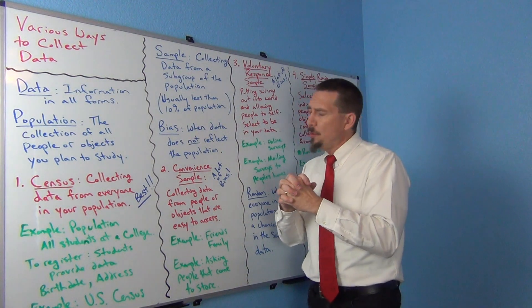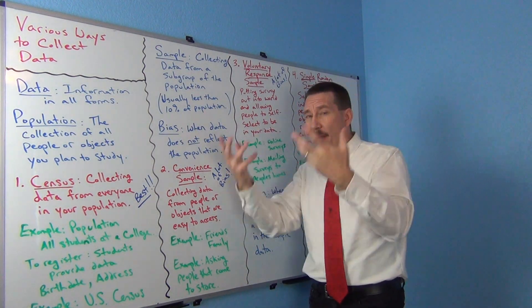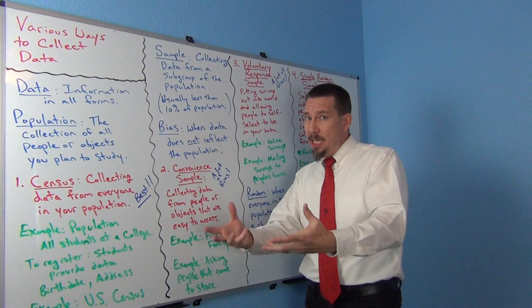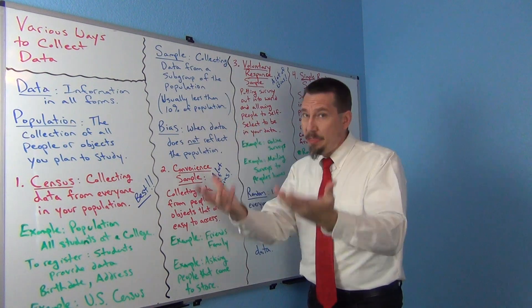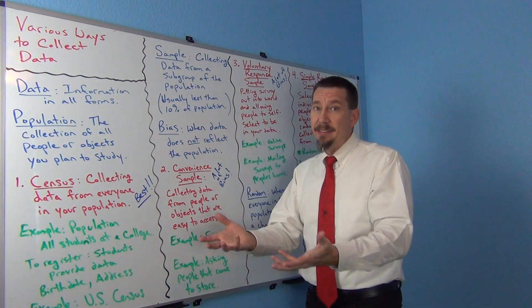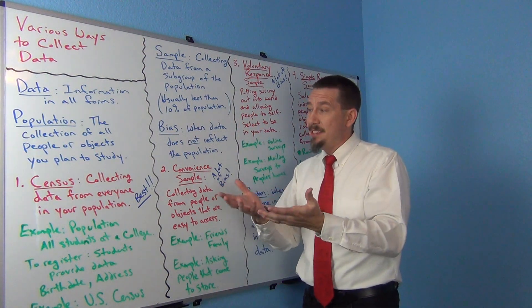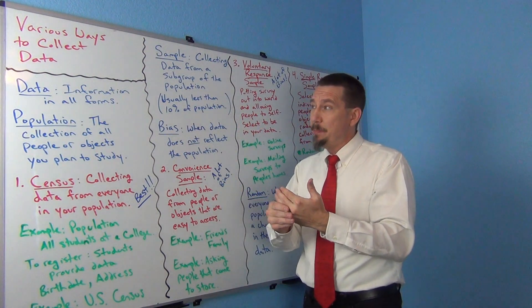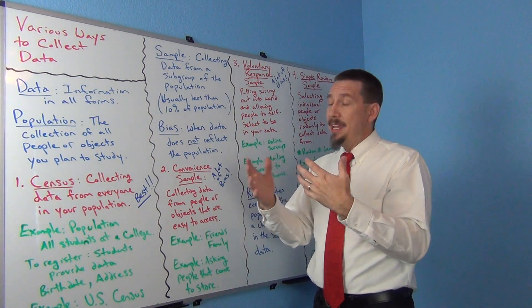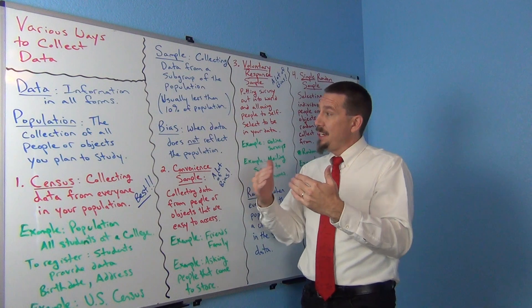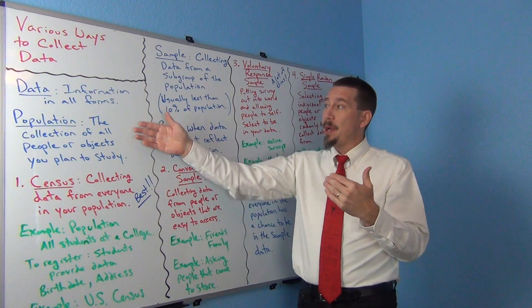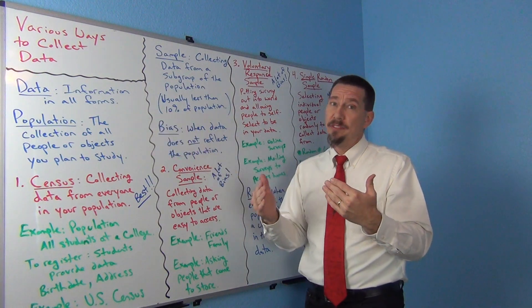So when you start thinking about ways of collecting data, you also start thinking about bias: is this data messed up? Is it going to reflect the population I'm after?